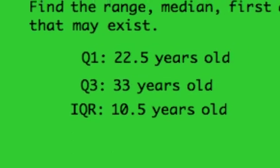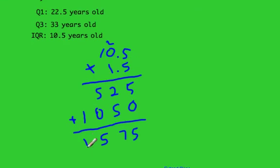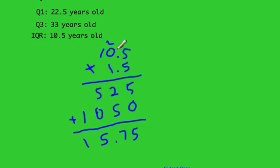To determine outliers mathematically, we multiply the interquartile range of 10.5 by 1.5. The value 1.5 is used because it tells you when data points are far apart from the rest. Multiplying 10.5 times 1.5 — noting there are two decimal places — we slide the decimal two spaces left, giving us 15.75. This makes sense because 10.5 times 1 is 10.5, so the answer should be a bit higher than that.